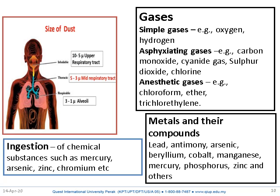Gases are another component of chemical hazards. Simple gases are oxygen and hydrogen. Asphyxiating gases — meaning those that can cause asphyxia or breathing difficulty — include carbon monoxide, cyanide, sulfur dioxide, and chlorine. All these can cause asphyxia.